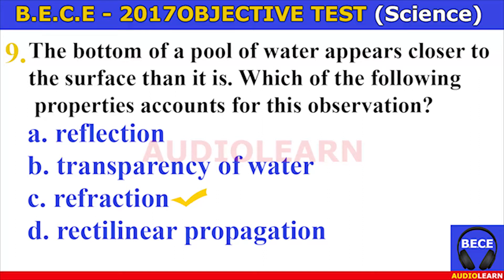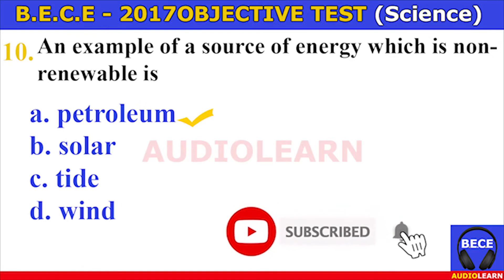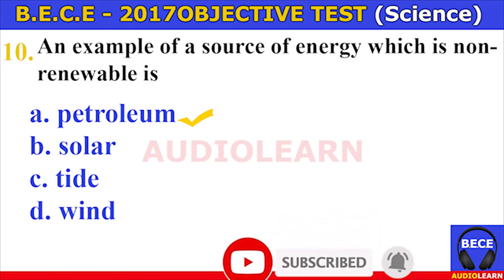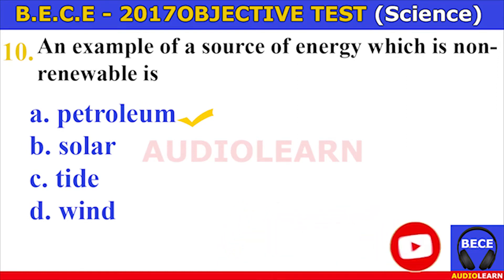Number nine. The bottom of a pool of water appears closer to the surface than it is. Which of the following properties accounts for this observation? A. Reflection, B. Transparency of water, C. Refraction, D. Rectilinear propagation. The answer is C. Refraction. The bottom of a pool of water appears closer to the surface than it is due to refraction.